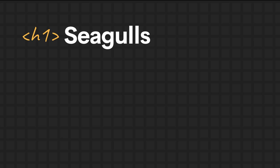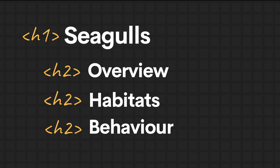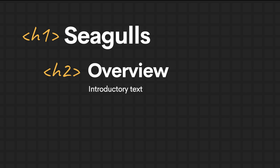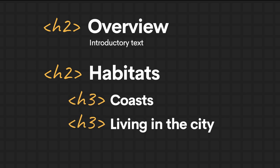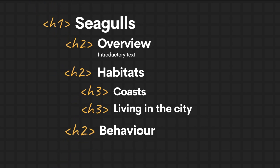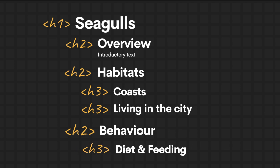The H1 describes what the entire page is about — it's basically the title for the entire page, and everything on it should be under that topic. My H2s, which will be multiple, might be Overview, Habitat, and Behavior. Under Overview, I might have some basic paragraph text about seagulls. Under Habitat, I might get into more detail and have an H3 about Coasts and another H3 about Living in the City. Under the Behavior H2, I might have H3s of Diet and Feeding, or Breeding.